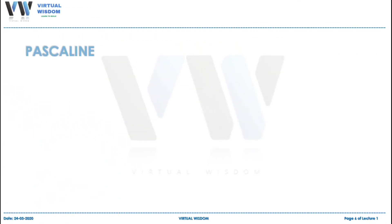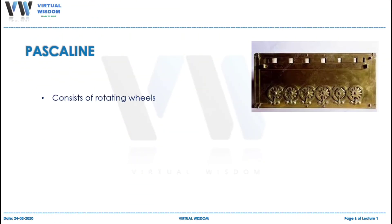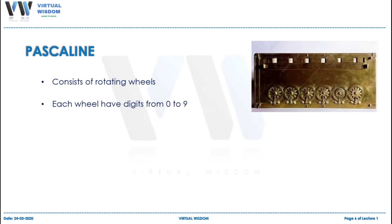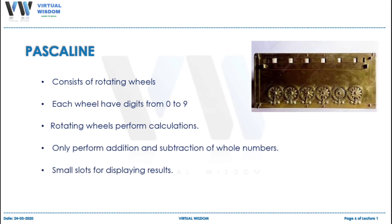After Abacus and Napier's Bone, the device which was invented was Pascaline. It consisted of rotating wheels having digits from 0 to 9. By rotating these wheels, different operations or calculations were performed. After one wheel is rotated, the next wheel moves by one digit and thus the operations are performed.